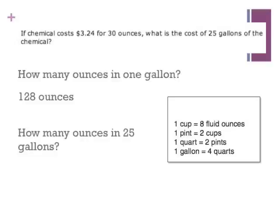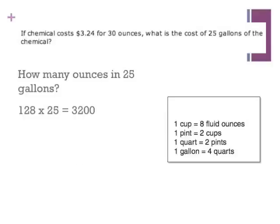Okay, back to our original question. The original question asks about 25 gallons. Since there's 128 ounces in every gallon, 128 ounces times 25 gallons would be 3200 ounces.